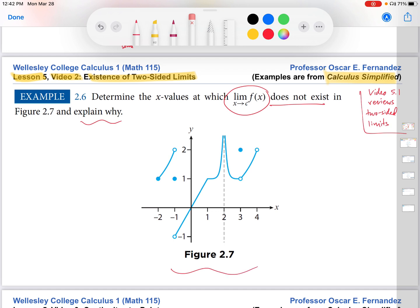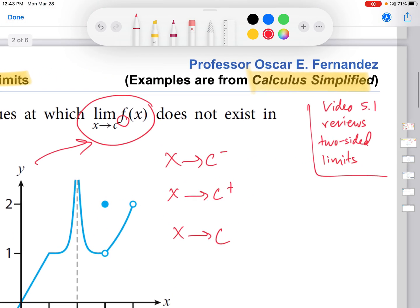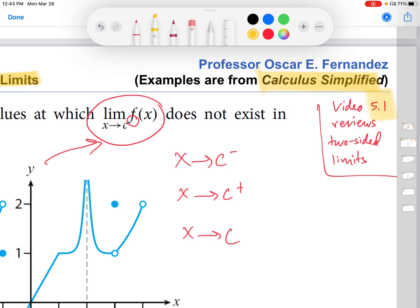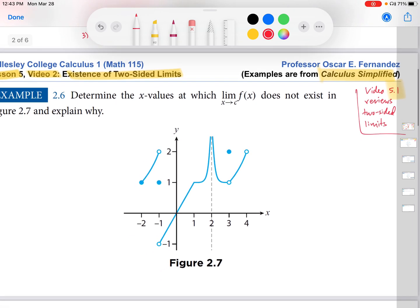So first thing to point out is that this is a two-sided limit. And again, we can tell that because there is no superscript on the C. This would be a left-hand limit. This would be a right-hand limit. But we are just given this. So that's the notation for a two-sided limit. You might want to review, if you're a little sketchy, the details of how you calculate two-sided limits. So video 5.1 includes a lot of those details.